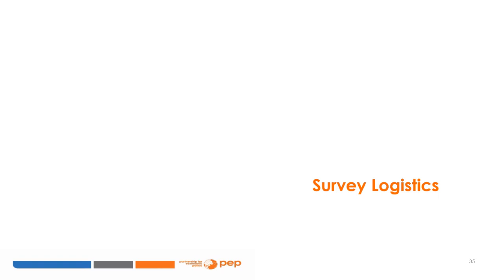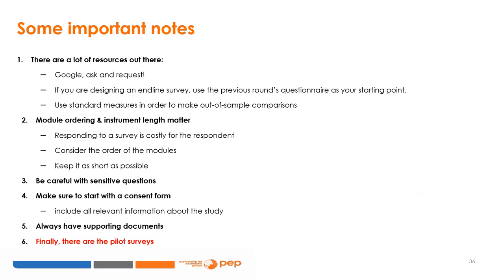Now let's analyze survey logistics. Even when designing a new instrument, there are many resources available. Many researchers share questionnaires from past projects and agencies post questionnaires online. If designing an endline survey, use the previous round's questionnaire as a starting point. To facilitate comparability across survey rounds, only modify questions when necessary. Use standard measures for out-of-sample comparisons. It is generally better to remove or add questions than to change them. Be careful with module ordering and instrument length — avoid complicated questions too early or too late, and keep the survey as short as possible.